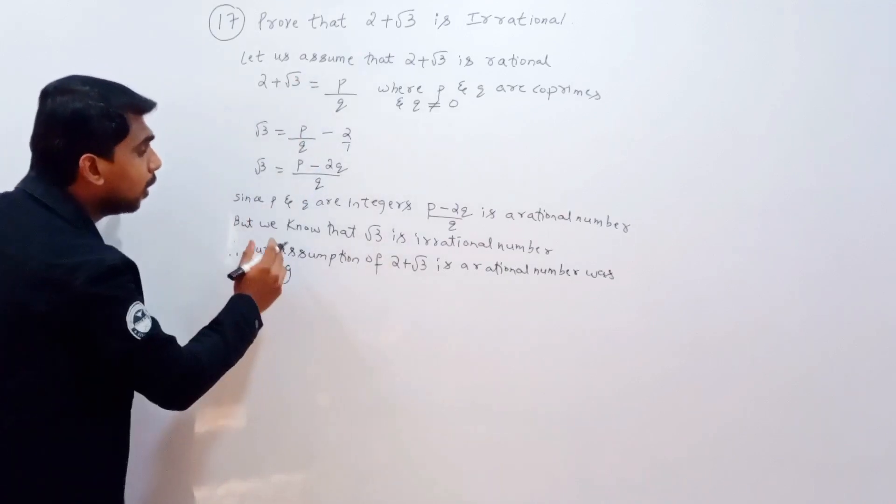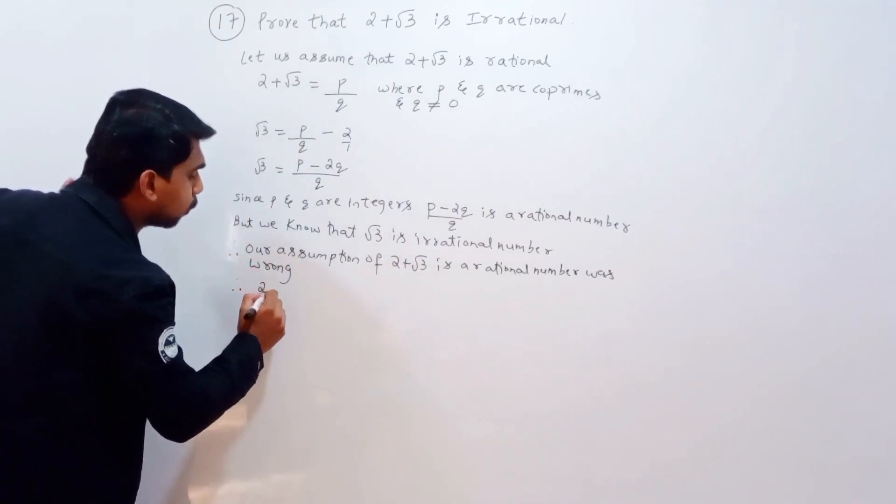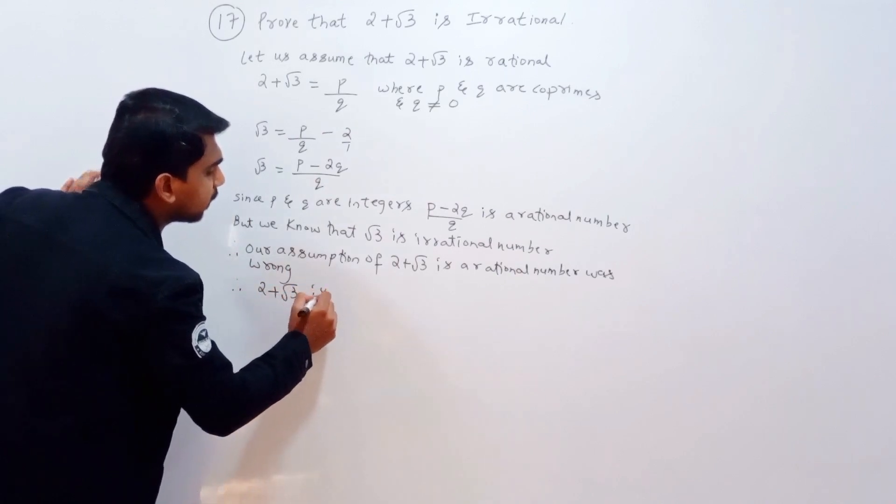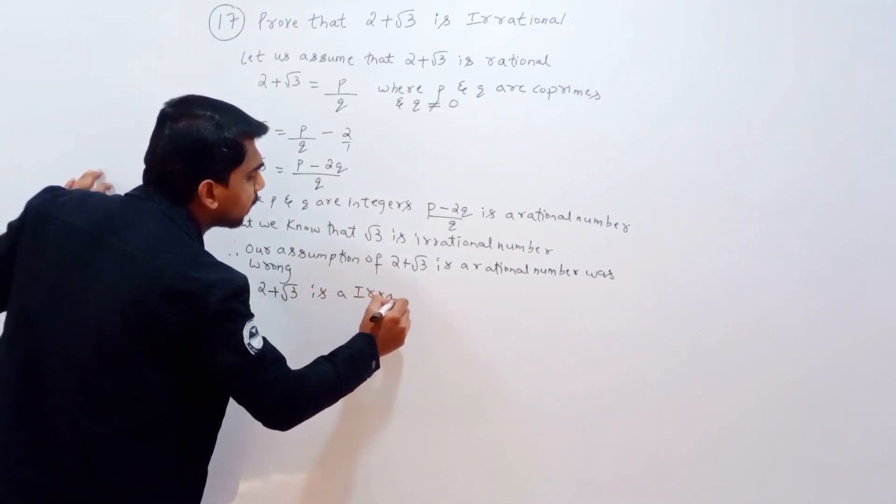Since our assumption is wrong, therefore 2 plus root 3 is an irrational number.